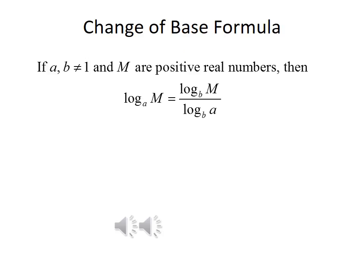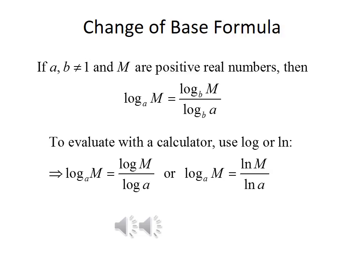Previously, we said the only logarithms we can evaluate on a calculator are log base 10 and the natural logarithm. But we can actually evaluate any base logarithm using the change of base formula. If A and B are not equal to 1, and M is a positive real number, then log base A of M equals log base B of M divided by log base B of A. To evaluate any base log with a calculator, we can use log base 10 or the natural log: log base A of M equals log(M) divided by log(A), or equivalently ln(M) divided by ln(A).